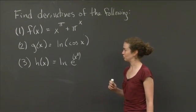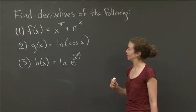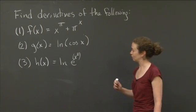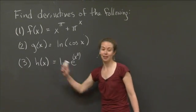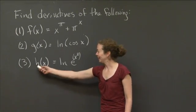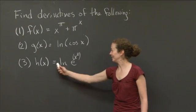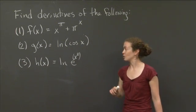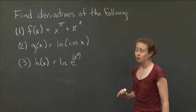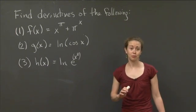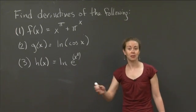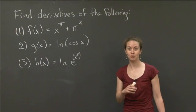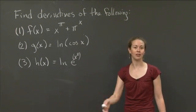The second function is g of x equal to natural log of cosine of x. And the third one is h of x — that's an h, not a natural log — equal to natural log of e to the x squared. So you have three functions and you want to take the derivative of each with respect to x.